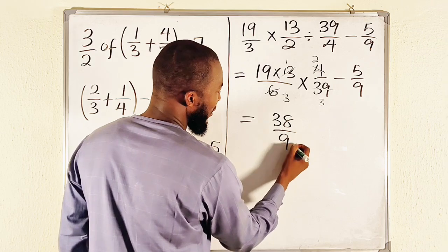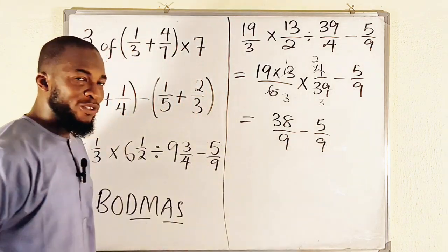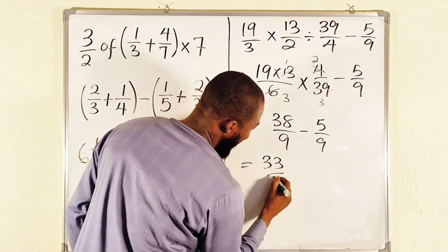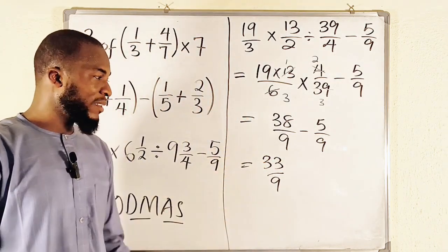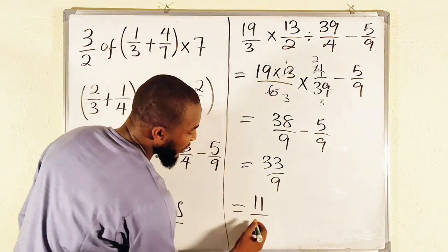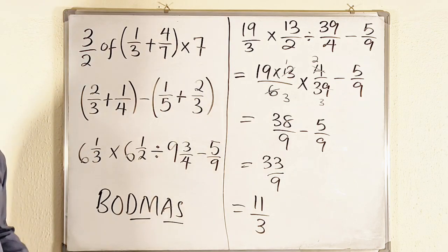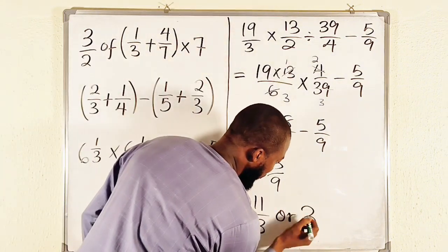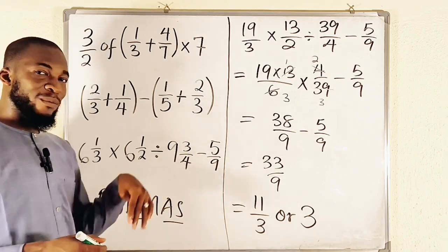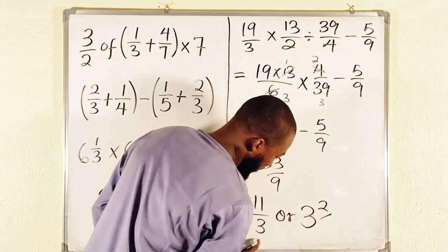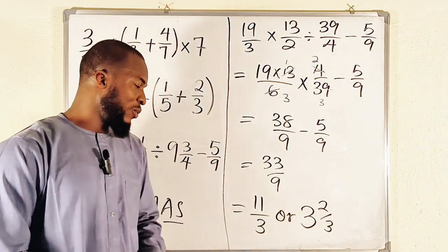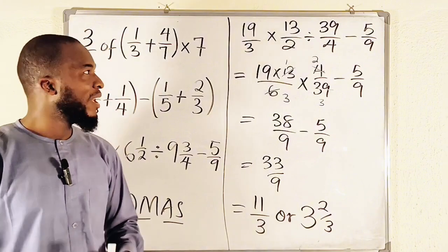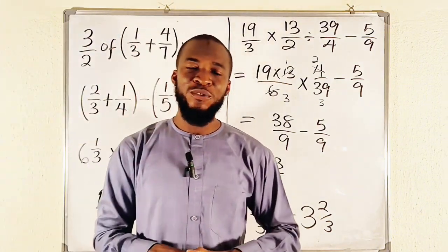That gives us 38 over 9, then minus 5 over 9. Since the denominators are the same, 38 minus 5 is 33, giving us 33 over 9. Since 3 is a common factor: 3 into 33 is 11, and 3 into 9 is 3, so our simplified fraction is 11 over 3. As a mixed number: 3 goes into 11 three times with a remainder of 2, giving 3 and 2 over 3. To verify: 3 times 3 is 9, plus 2 is 11 over 3. Correct.